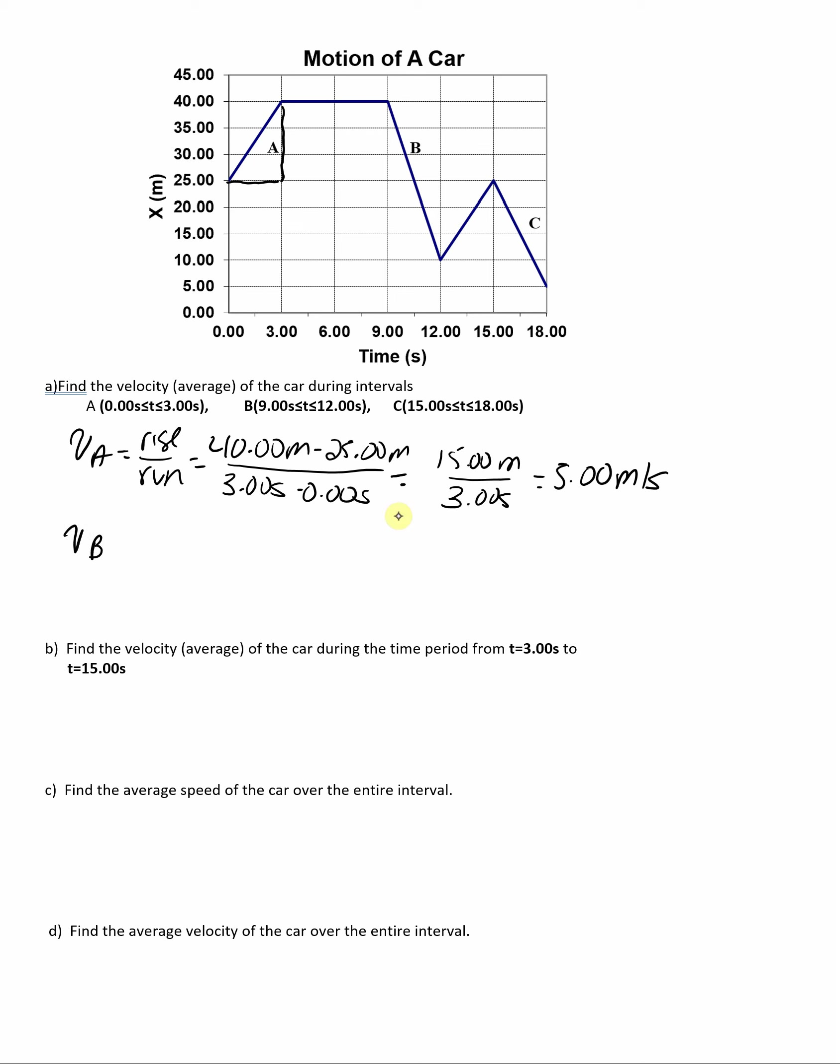When we look at the velocity in interval B, that is also the rise over the run. So we'll look at the slope between here and here.